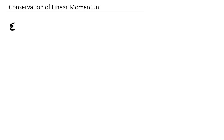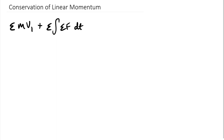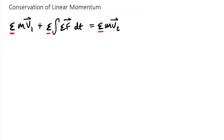The impulse-momentum equation looks like this: the sum of all your masses times your initial velocity, plus the sum of the integral of the sum of the forces dt. These sums out front apply to multiple particles, and each term — initial momentum, impulse, and final momentum — is a vector.